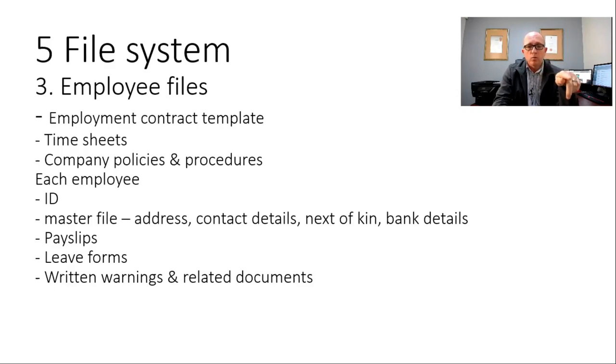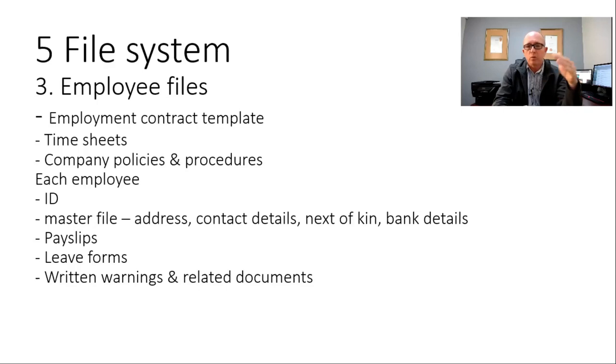For every single employee you need to keep: a copy of their ID — I've seen people employ staff without having an ID copy — and from an accounting perspective for their IRP5 files you need a tax number. You'll also keep a master information page where they fill in their full names, surnames, ID numbers, addresses, contact details, next of kin, and bank details so you can pay them. Keep copies of their payslips, and if you're paying people cash they need to sign for the money received — otherwise they might claim they were short-paid or never paid.